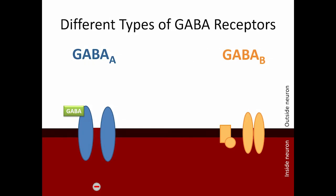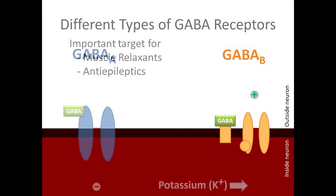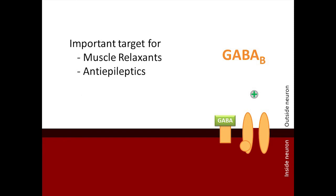GABA-B receptors are metabotropic receptors. When GABA binds to a GABA-B receptor, this indirectly opens a pore that allows a positively charged potassium ion to exit the neuron. A positively charged ion leaving or a negatively charged ion entering the neuron have the same effect — both make it difficult to increase positive charges inside the neuron to the threshold for an action potential. GABA-B receptors are important targets for muscle relaxants and anti-epileptics.